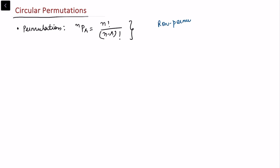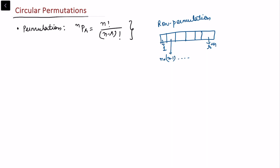In row permutation, order of the object does matter. For example, out of n objects we want to consider r permutations. For the first position we have n choices, for the second object we have n minus 1 choices, and for the rth object we have n minus r plus 1 choices. From here we can get directly to the nPr formula.